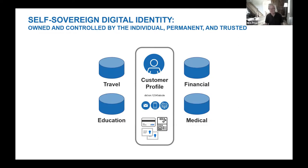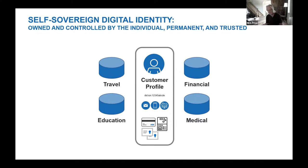A driver's license is a verifiable credential, as is a payment method. A claim you might wish to make is that you are old enough to qualify for a senior citizen discount, or that there is enough money in your bank account to pay for something — these we call zero-knowledge proofs. The important thing about both verifiable credentials and ZKPs is that the receiver is not required to contact the issuer to verify them. There's no phone home needed. The decentralized public key infrastructure provides proof sufficient to enable the required trust. There is one profile for the individual, decomposing into personas containing only the information relevant for a specific purpose.